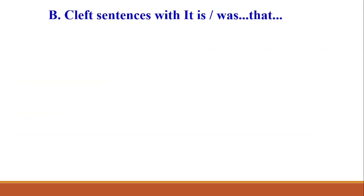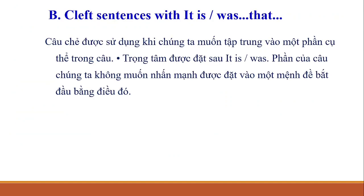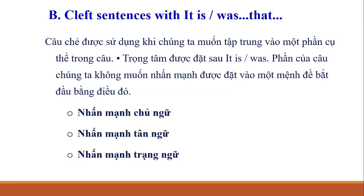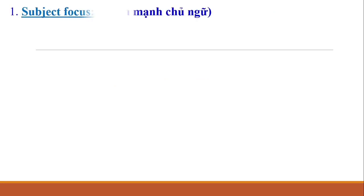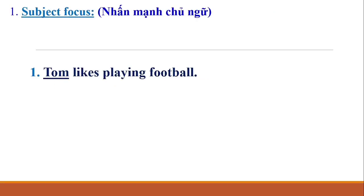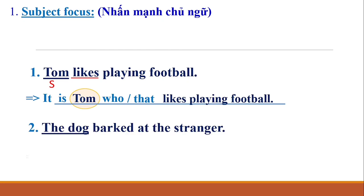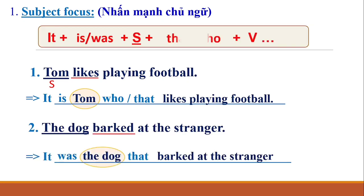Cleft sentences are used when we want to focus on a specific part of a sentence. The emphasized part is placed after 'it is/was.' The part of the sentence we don't want to emphasize is placed in a clause beginning with 'that.' We have three cases: emphasizing the subject, object, and adverbial. For emphasizing the subject, the structure is: It is/was + subject + that/who + verb.